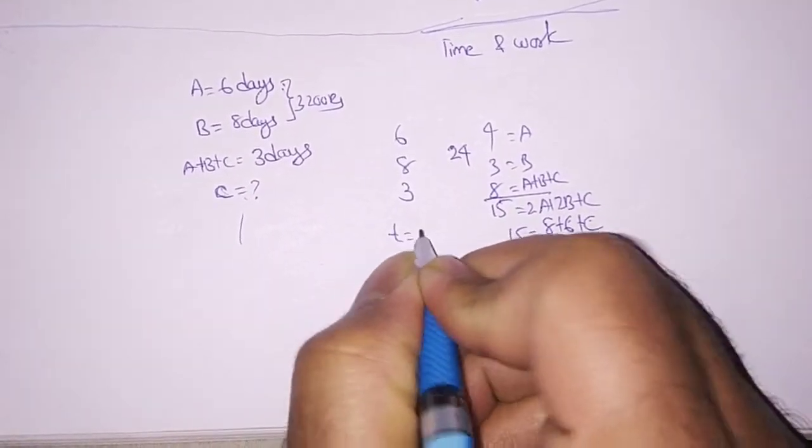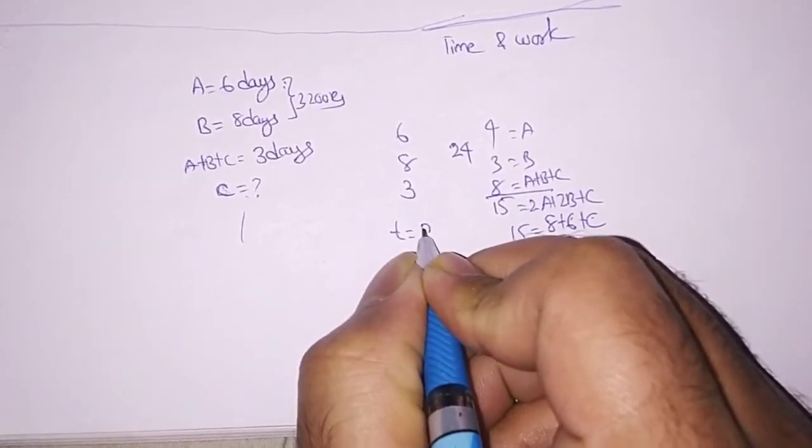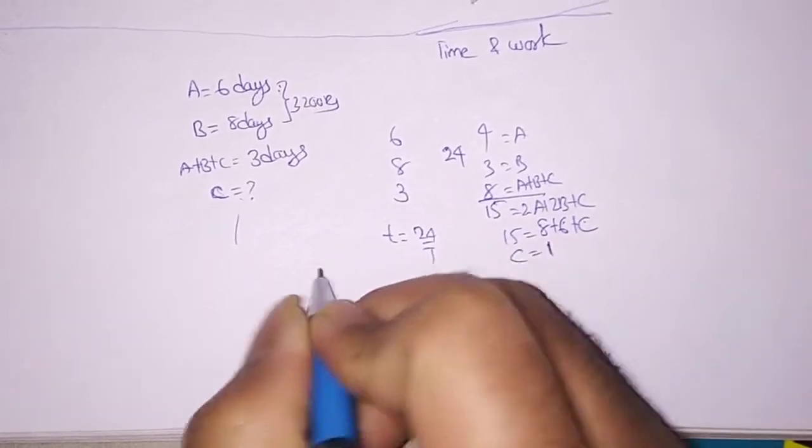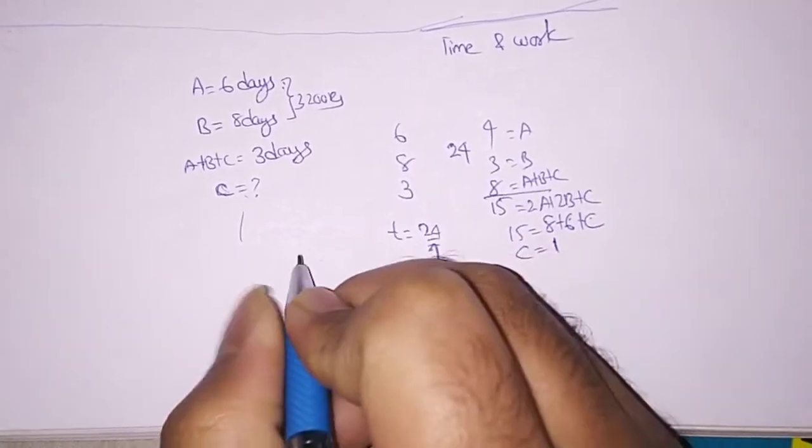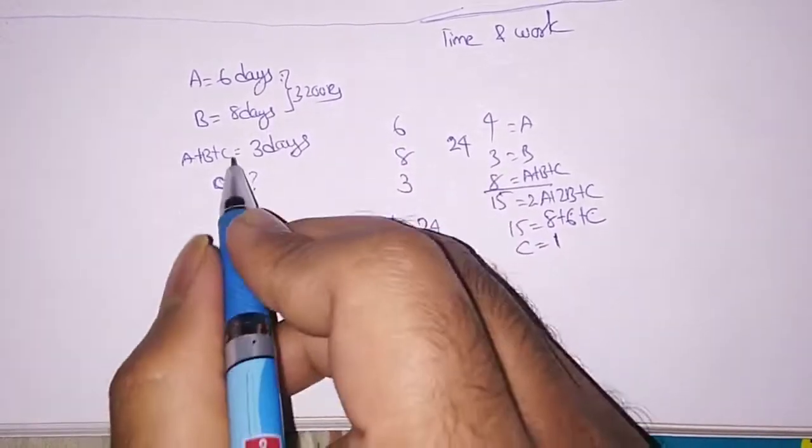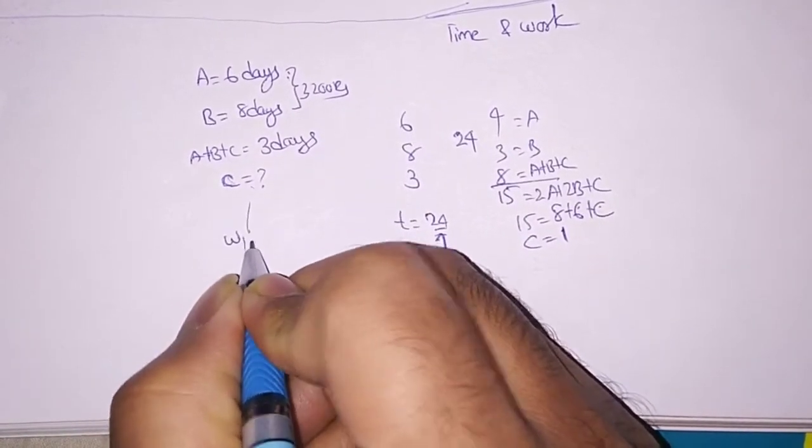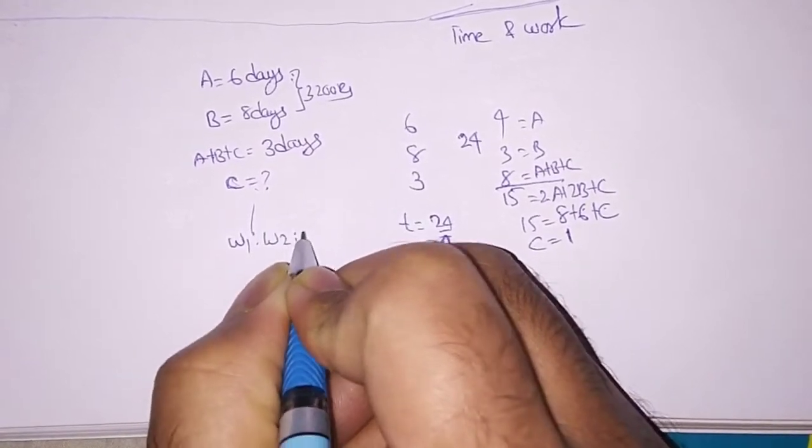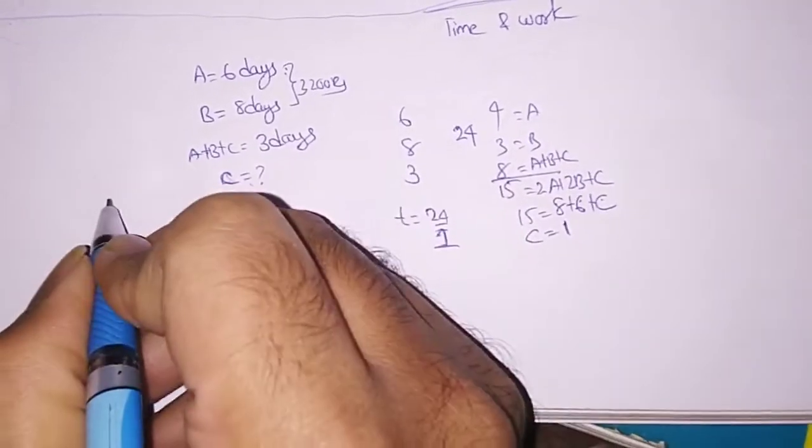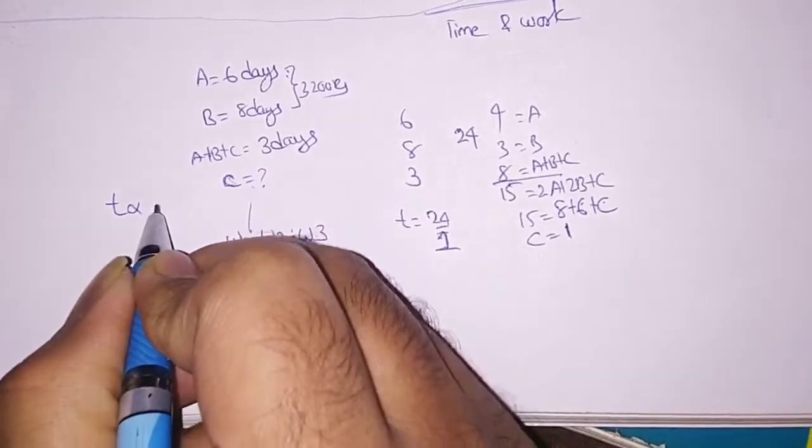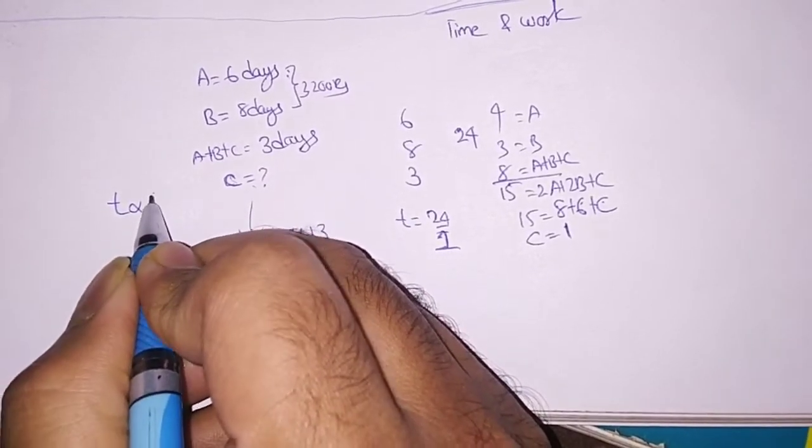So if we find time equal to, we will get 24 by 1. So we have to divide the money based on the work. So work ratio of work W1 is to W2 is to W3. As you know that time is inversely proportional to work.